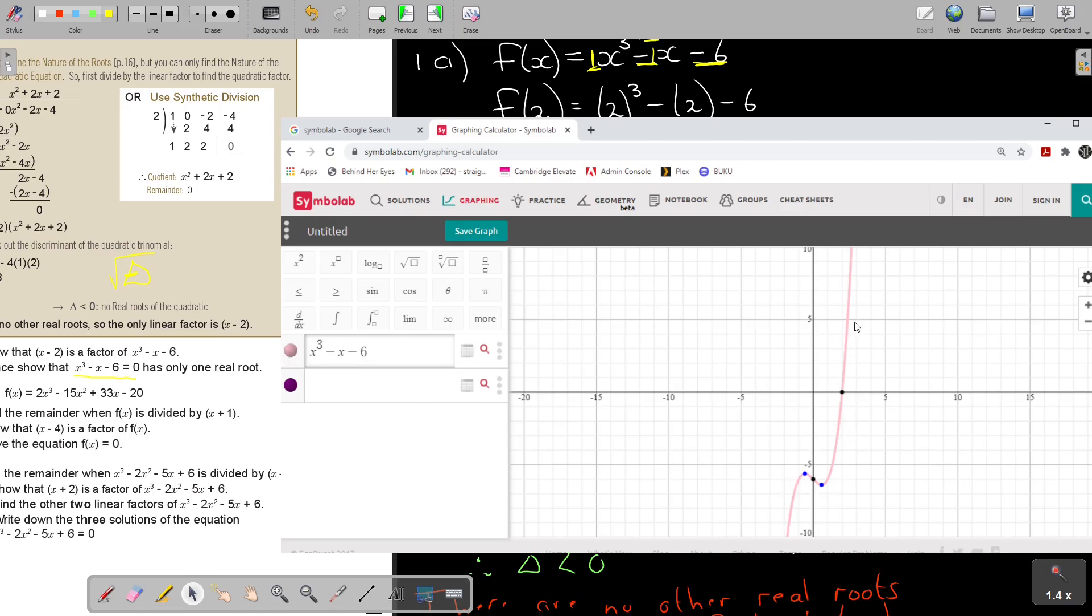And look how this graph looks. It's cutting there at 2, that's the real root. But because this turning point, this first turning point, is not on top of the x-axis - both of them are basically at the bottom of the x-axis. So this curve is only touching the x-axis there. If that turning point was, say, for example, there, it would have cut three times. But this example is only having one real root. I just wanted you to see the picture.